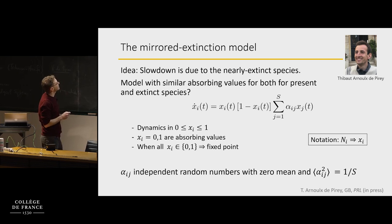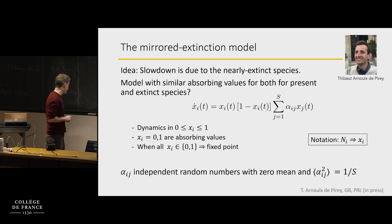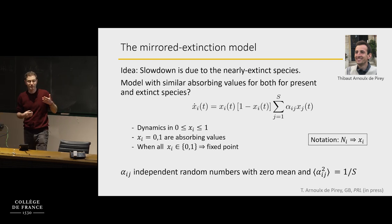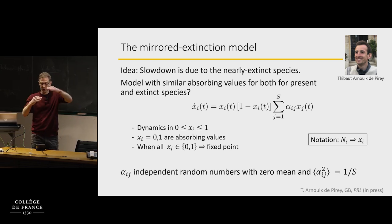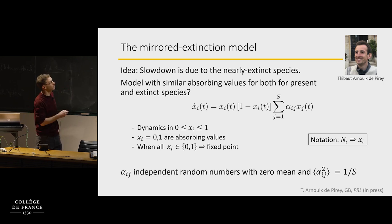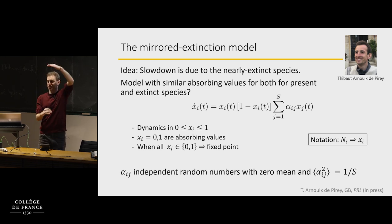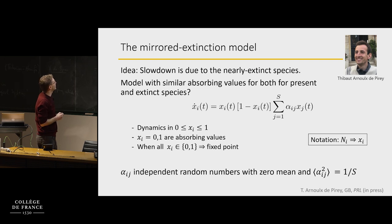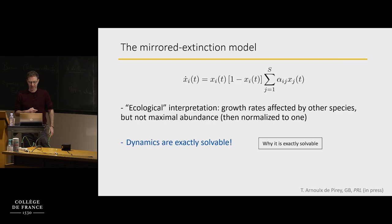We call it the mirrored extinction model, because just like in usual situations where at 0 you stay at 0 forever, here when you're at 1 you also stay at 1 forever. So there are two types of absorbing boundaries — you either go extinct at 0 or at 1. The alpha_ij's are independent random numbers as before, with zero mean.